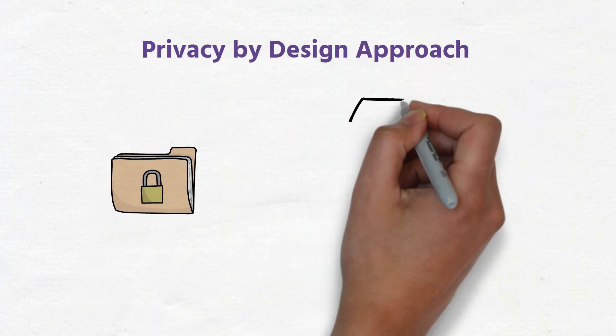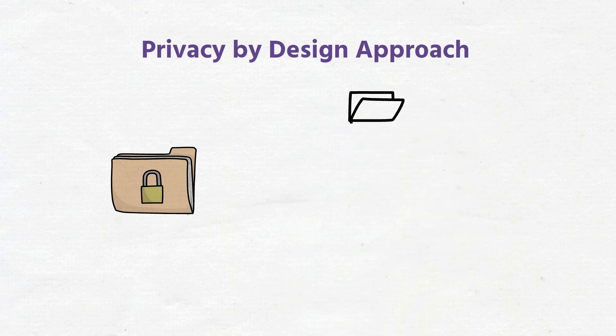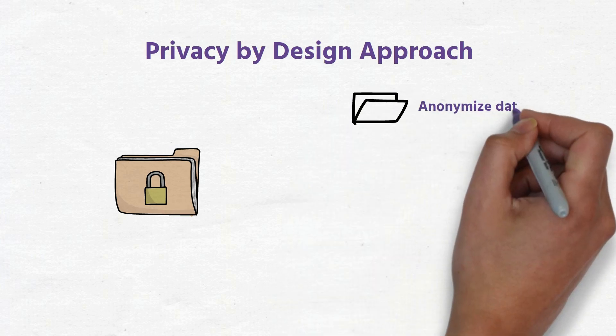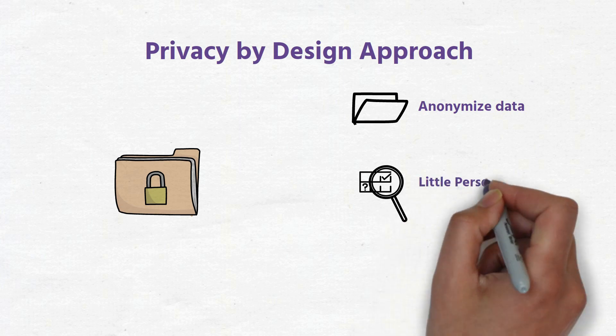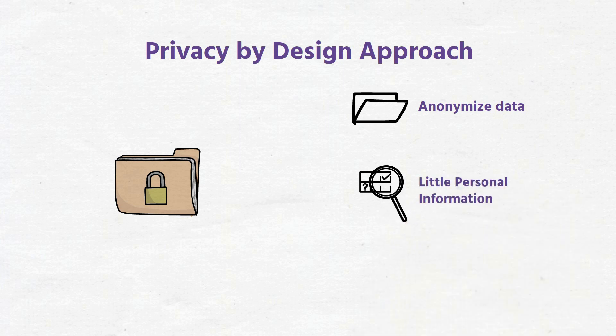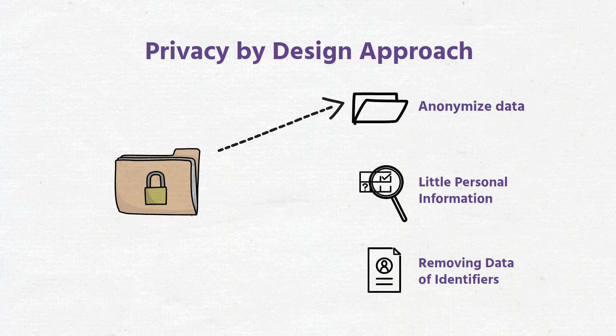For example, one way to enact a Privacy by Design approach is to anonymize data at the source. When you create a practice of collecting as little personal information as possible, removing data identifiers such as names, you build systems that have a mind to privacy from their design.